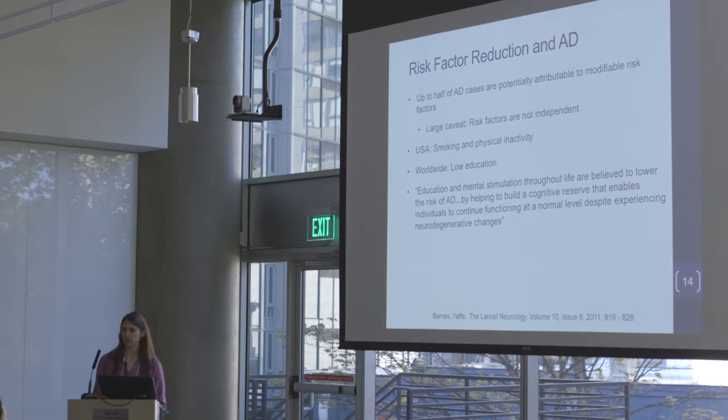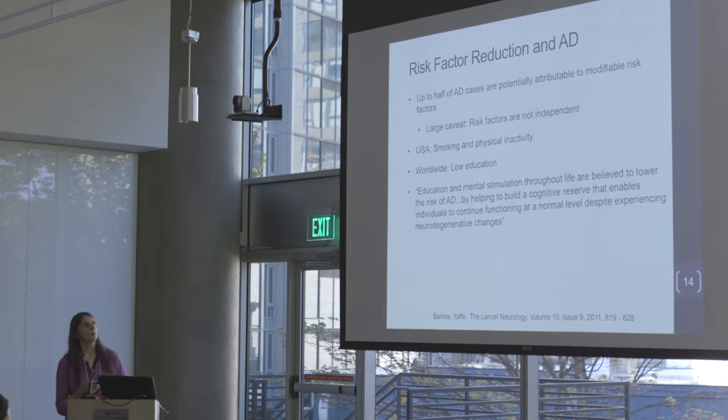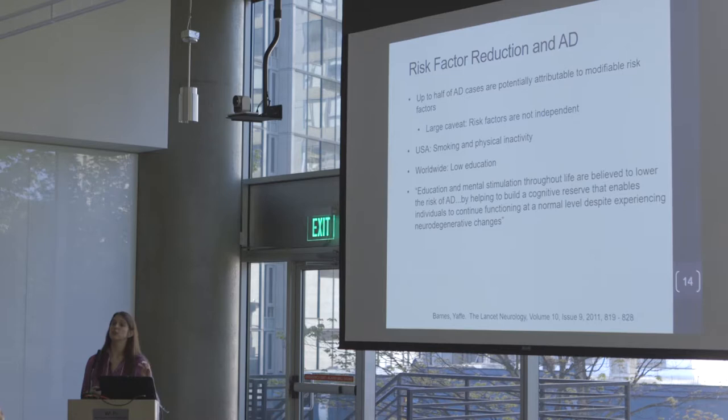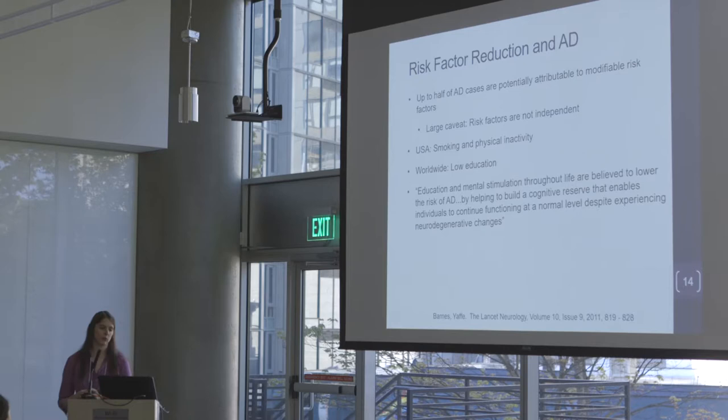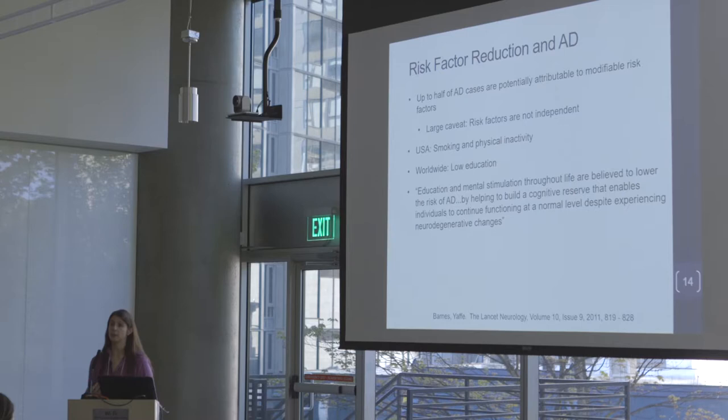What were the biggest risk factors in the United States? Smoking and physical inactivity — those were the two biggest. Worldwide, I thought this was really interesting: it was low education level — children not going to school. We're talking primary education, not fancy degrees. I'm a geriatrician, but this is a pediatric issue that leads later to dementia.